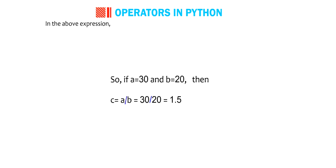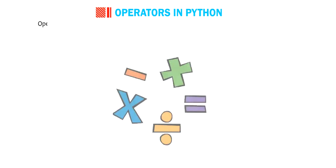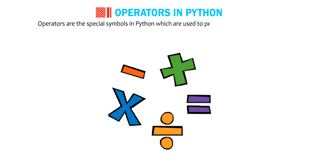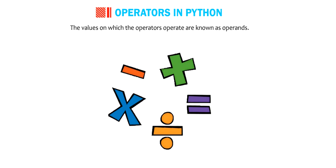In the above expression, slash symbol, which is used to divide these two numbers is called an operator. Operators are the special symbols in Python which are used to perform different operations: arithmetic, relational, and logical.